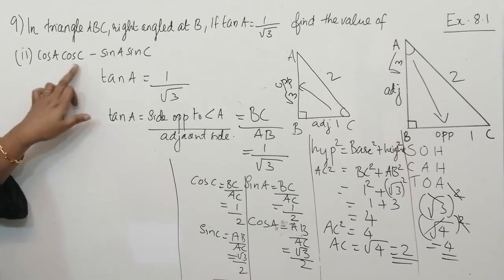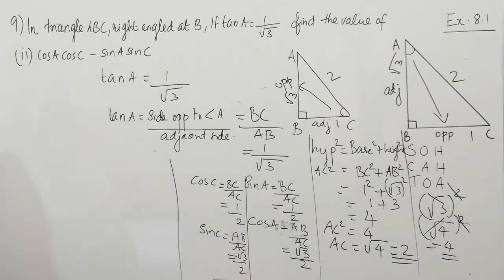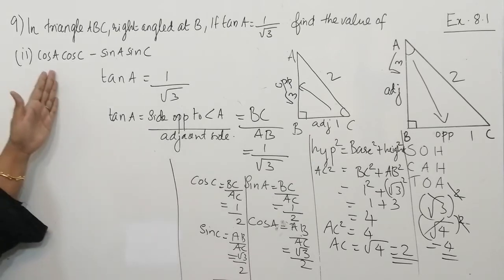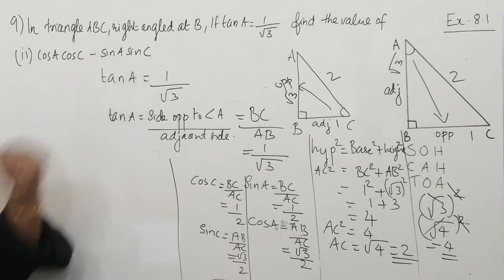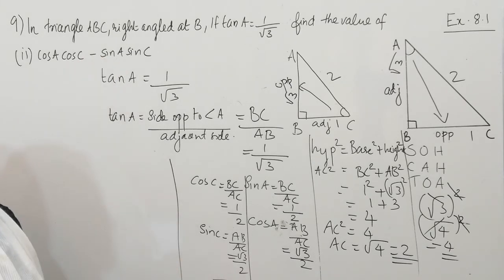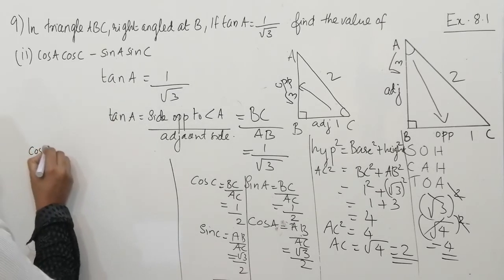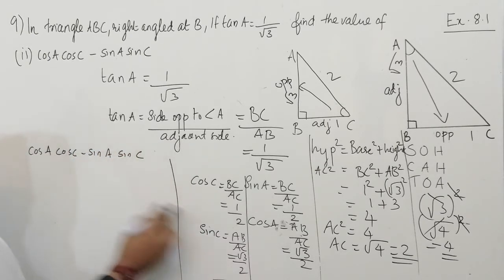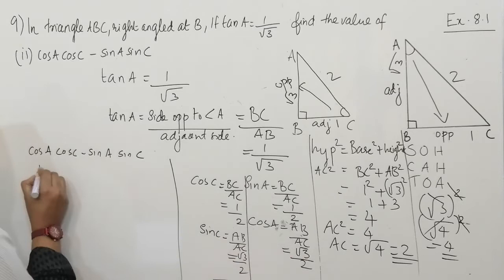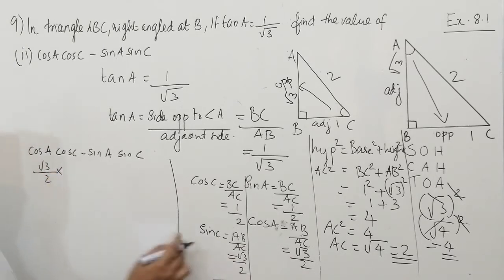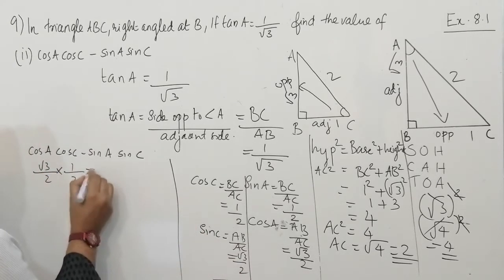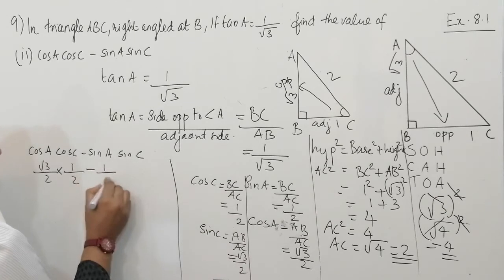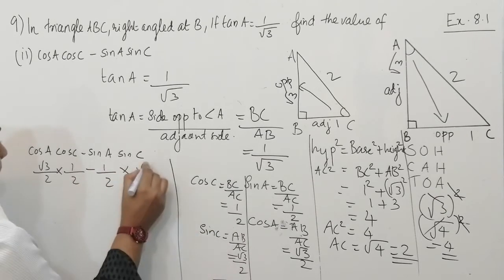The second question is cos A cos C minus sin A sin C. We already found the values for cos A, cos C, sin A, and sin C. We just substitute these values. Cos A is root 3 by 2 into cos C which is 1 by 2, minus sin A which is 1 by 2 into sin C which is root 3 by 2.